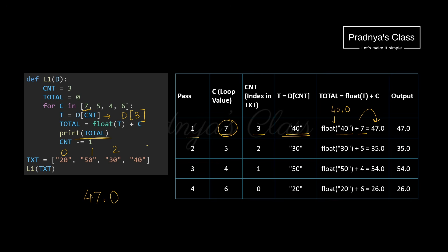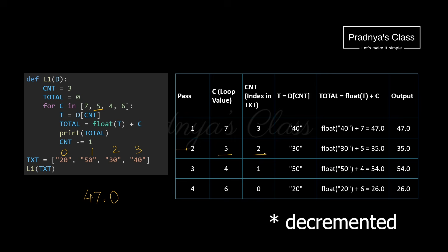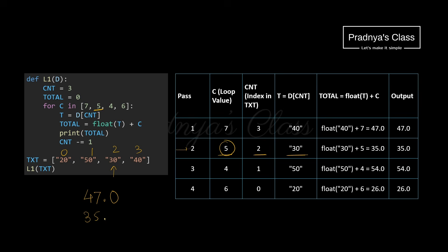There is also a statement decrementing c and t by 1. In pass two c is 5 and c_and_t is now 2. d[2] gives the string '30', which converts to 30.0, and adding c (5) gives 35.0. The second output is 35.0.